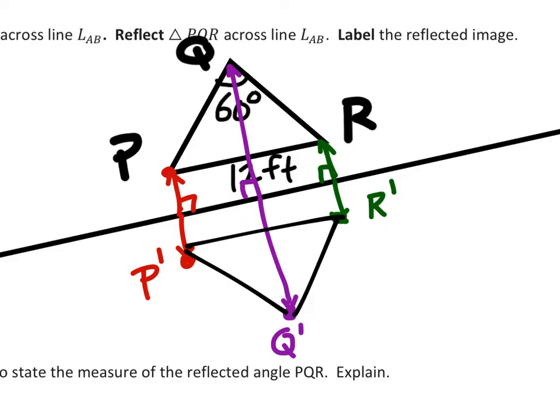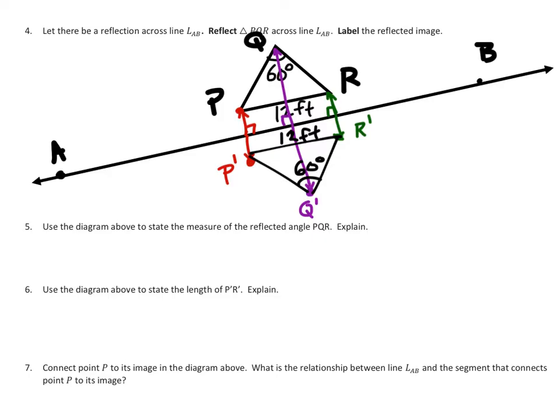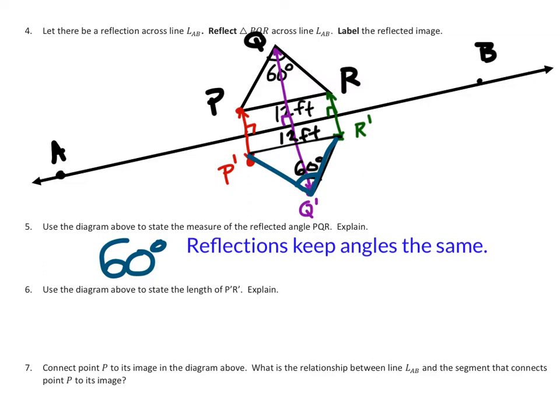Since the angle PQR was 60 degrees, the angle P prime Q prime R prime also will be 60 degrees. And the length PR was 12 feet, so the length P prime R prime also will be 12 feet. Use the diagram above to state the measure of the reflected angle PQR—that's 60 degrees. Why? Because reflections preserve angles or keep angles the same. The length of P prime R prime is 12 feet because reflections keep lengths the same as well.